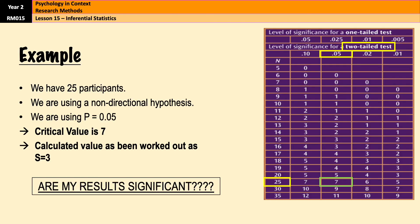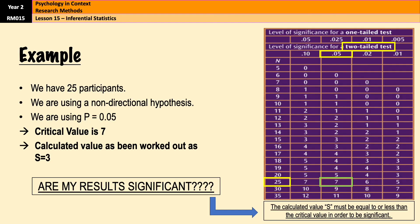You don't know why it's 3 yet, but by the time you get to video three you will know. My question now is: are my results significant? The key piece of information is this: the calculated value of S must be equal to or less than the critical value in order to be significant. You don't need to remember that — it will be given to you in every question like this. In this case, the calculated value of S equals 3 has to be equal to or less than the critical value of 7. It is. And therefore my results are significant. That is how you establish significance.